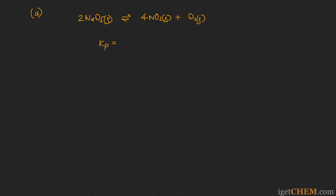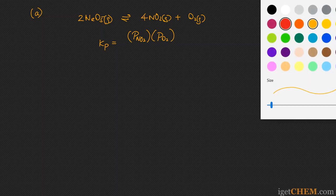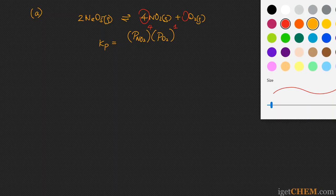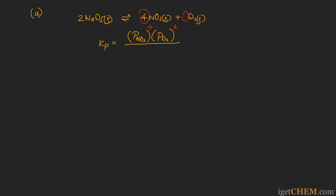To write down the equilibrium expression, you always put the products on top and the reactants on the bottom. So on top we have the partial pressure of NO₂ and the partial pressure of O₂. We always take the stoichiometric coefficients from the reaction and put them into the exponents. So NO₂ gets an exponent of 4, and O₂ has an implied coefficient of 1. In the denominator, the reactant N₂O₅ has a stoichiometric coefficient of 2, so we put that in the exponent.